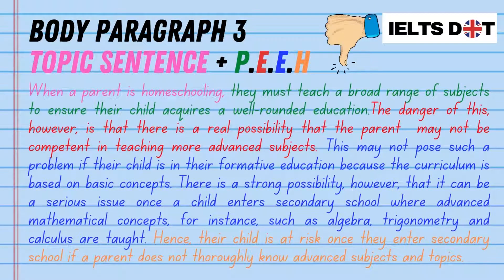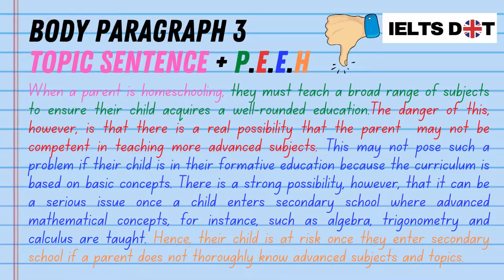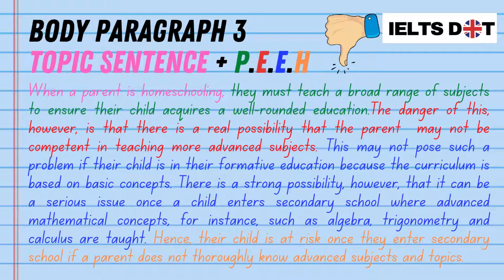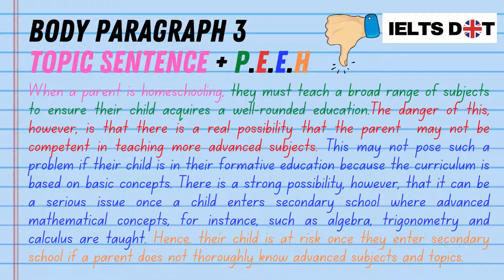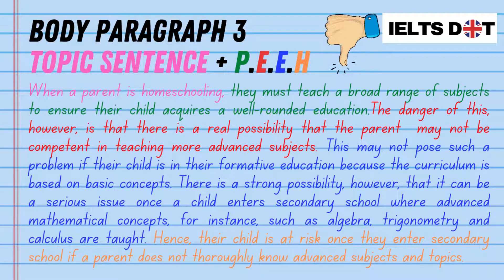Now let's start with the third body paragraph, which focuses on the second disadvantage, following the paragraph structure of a topic sentence plus P, E, and E. Because I've already used both 'thus' and 'therefore', I'll use H instead, which stands for 'hence'. 'When a parent is homeschooling, they must teach a broad range of subjects to ensure their child acquires a well-rounded education. The danger of this, however, is that there is a real possibility that the parent may not be competent in teaching more advanced subjects. This may not pose such a problem if their child is in their formative education because the curriculum is based on basic concepts. There is a strong possibility, however, that it can be a serious issue once a child enters secondary school where advanced mathematical concepts, for instance, such as algebra, trigonometry, and calculus are taught. Hence, their child is at risk once they enter secondary school if a parent does not thoroughly know advanced subjects and topics.'